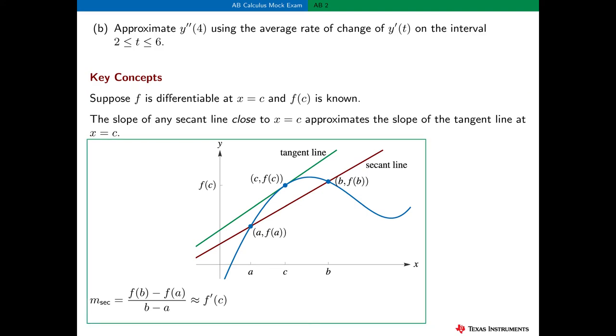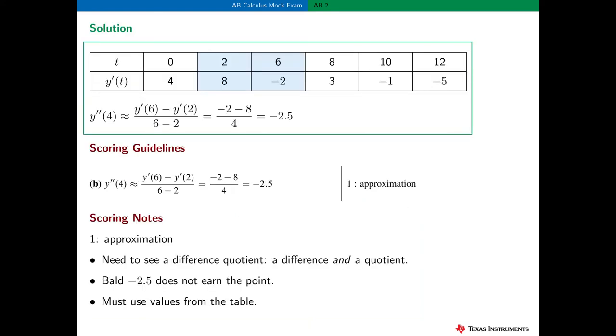Here's a graph to illustrate this general idea. Suppose I consider two points on the graph of f near the point where x = c. The slope of this secant line, also the average rate of change of f over the interval a to b, is close to the slope of the tangent line at x = c. This problem specifies that we use the average rate of change over the interval 2 to 6. So to approximate y''(4), we find the average rate of change, or the slope of the secant line, over that interval. And the approximation is -2.5.